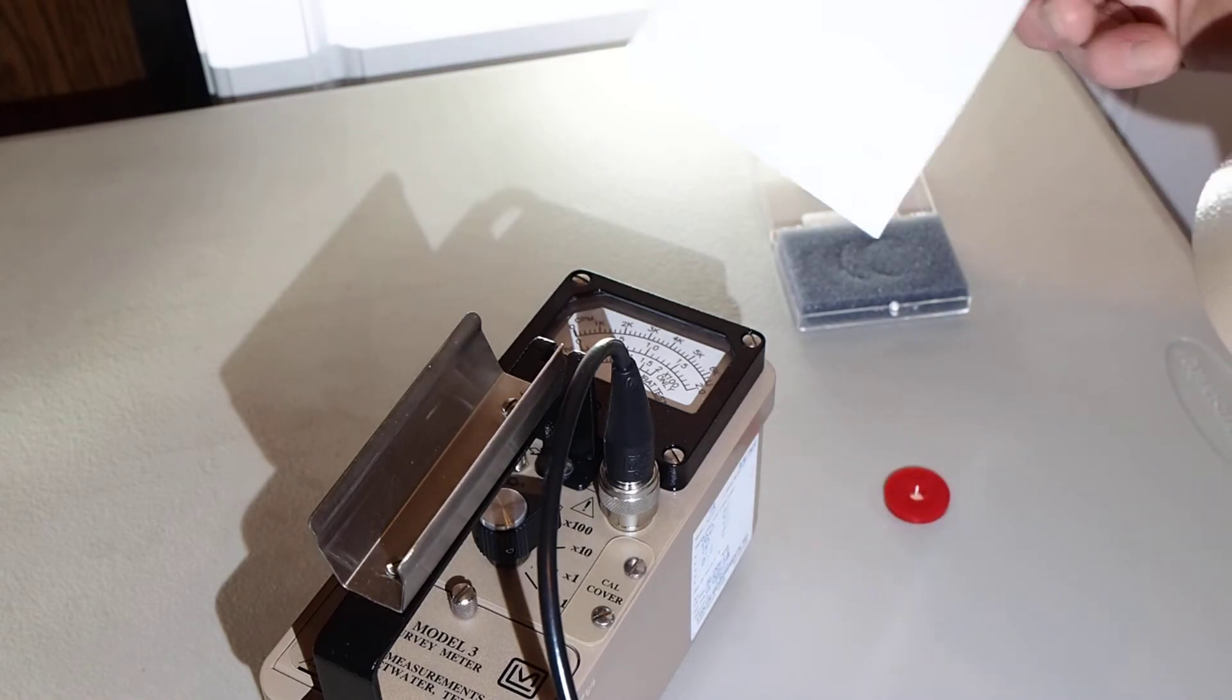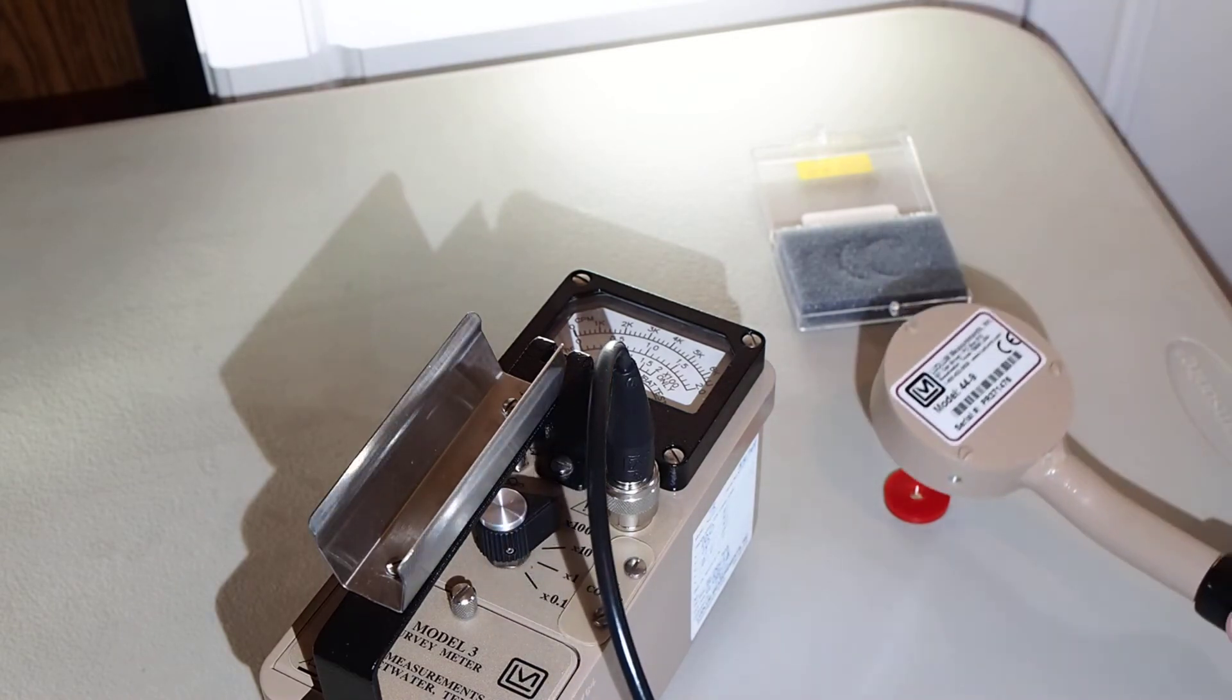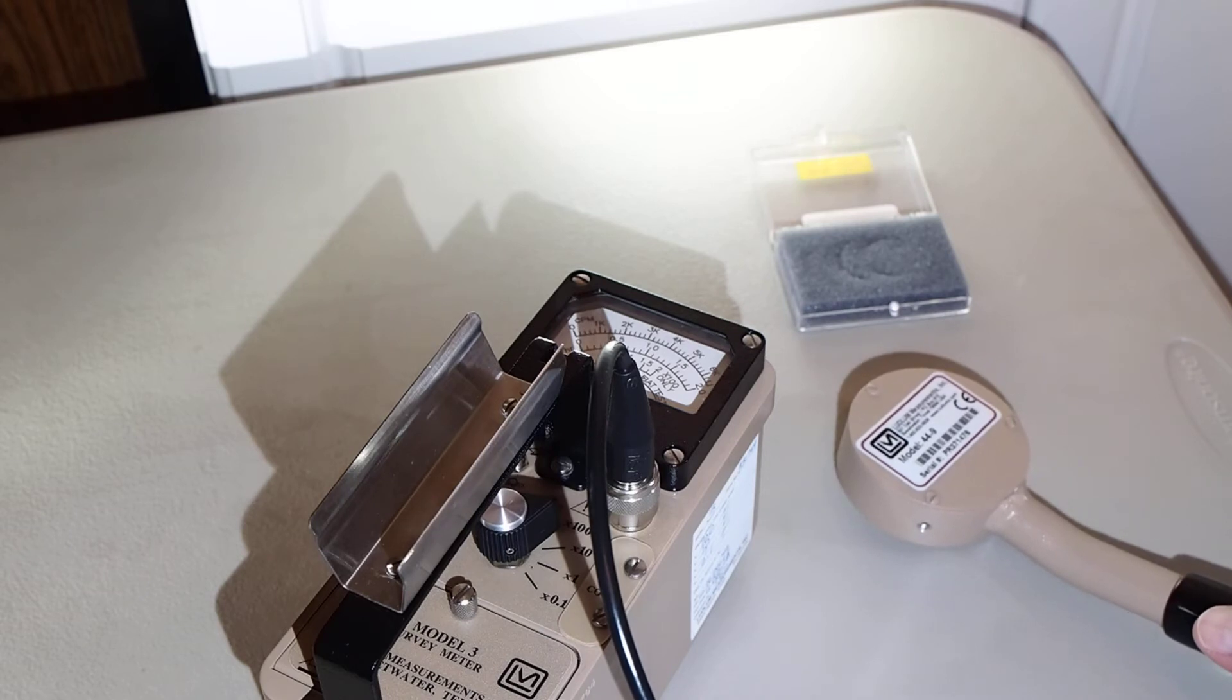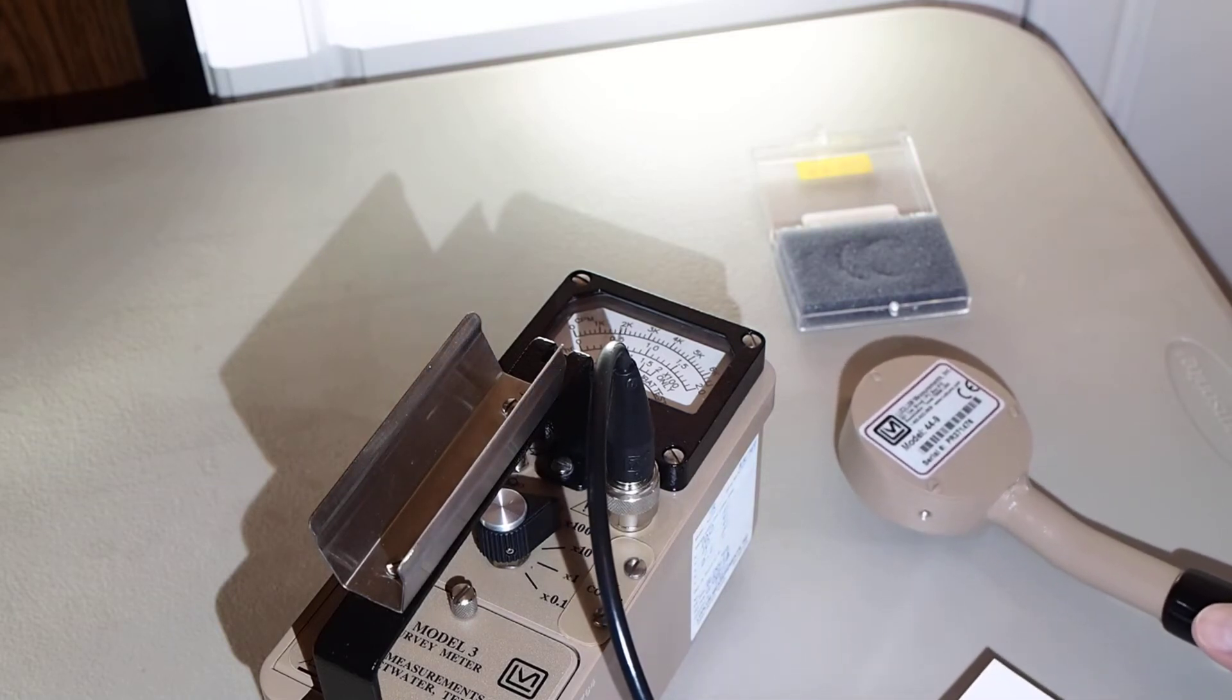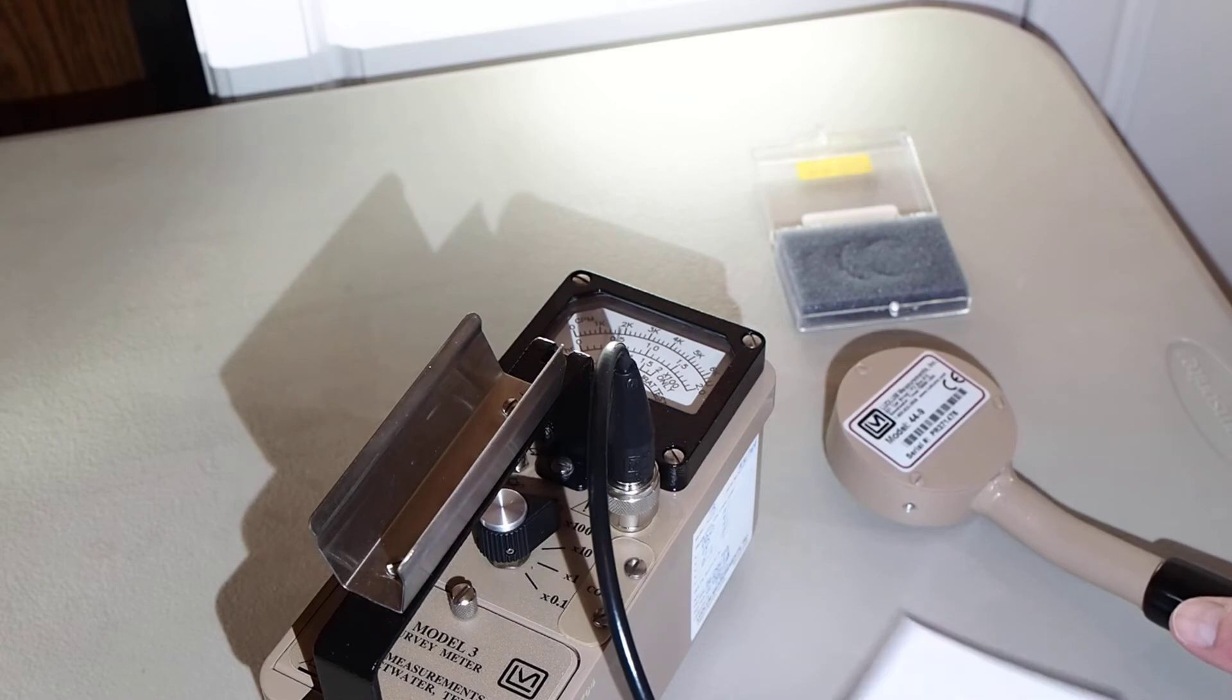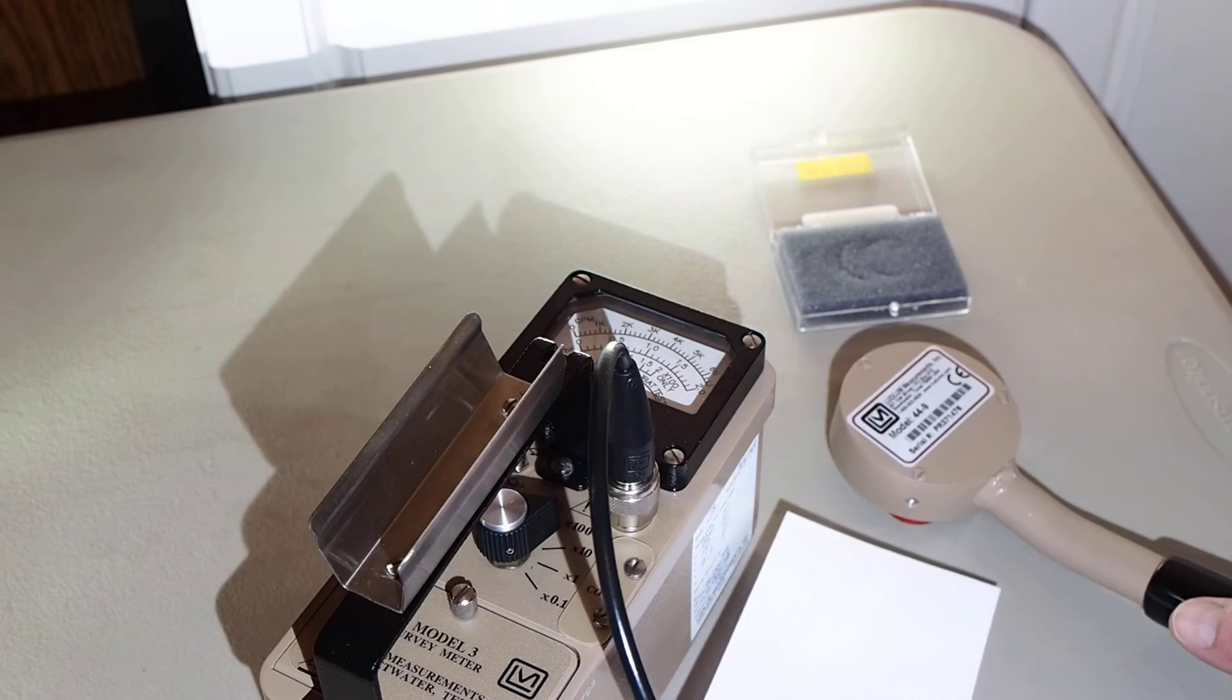This is a sheet of regular typing paper. Get back close to our source again. And we're short distance away from it, showing a little under 20,000 counts per minute. But let's insert this piece of paper between the alpha source, the polonium-210, and the Model 44.9 detector.